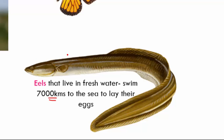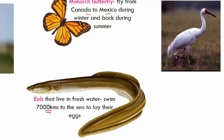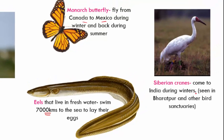The last migration example is the Siberian crane. This crane comes all the way to India during winters to escape from Siberian winters — you can see them in Bharatpur and other bird sanctuaries. If you visit any bird sanctuary during Indian summers, you can definitely find these birds there.